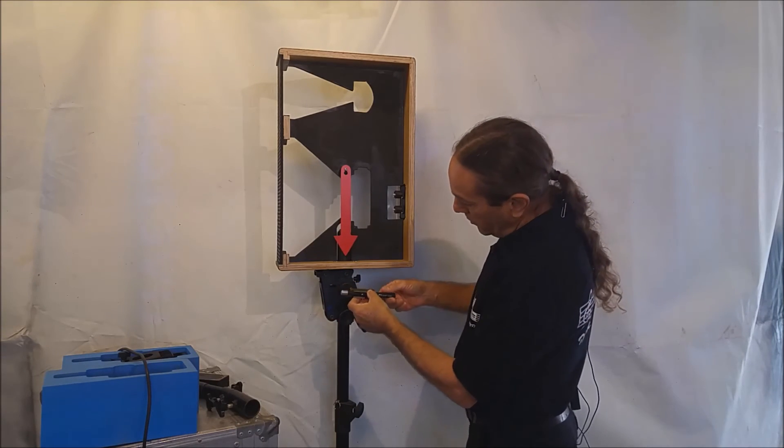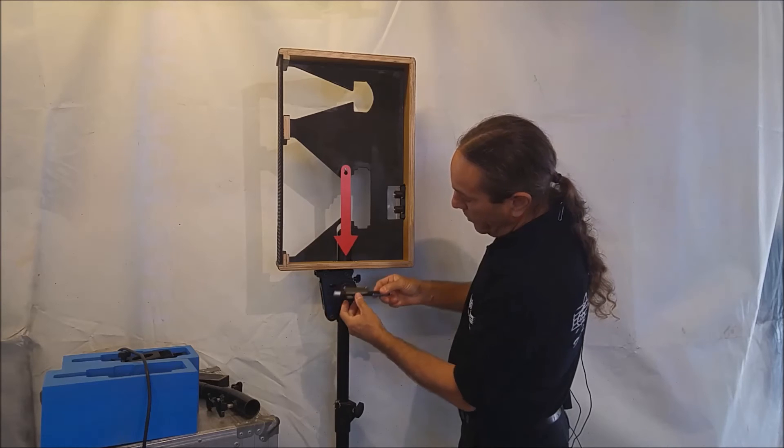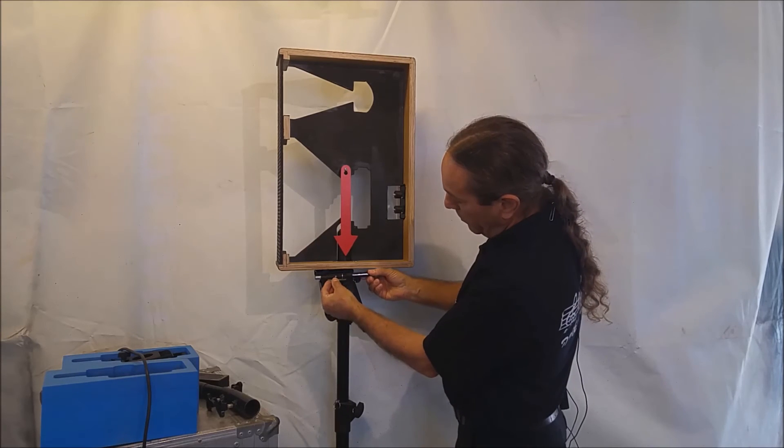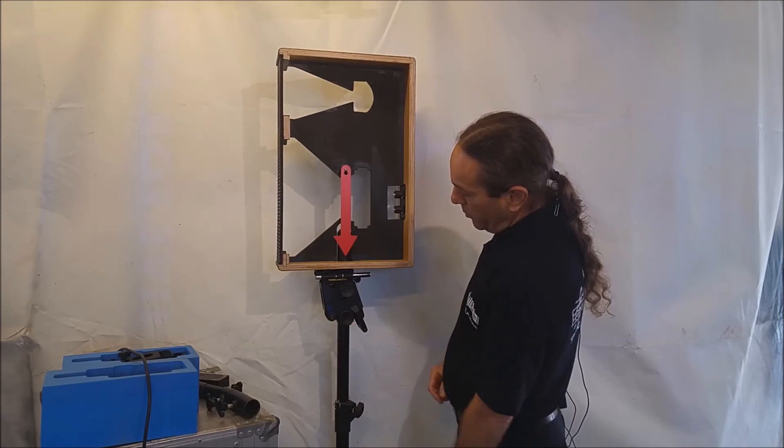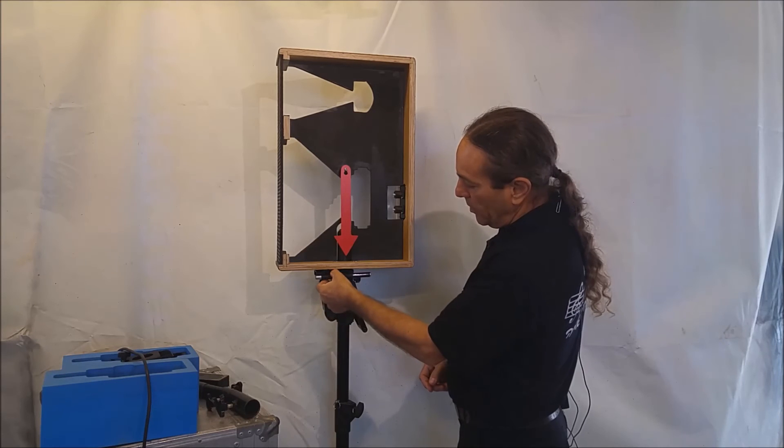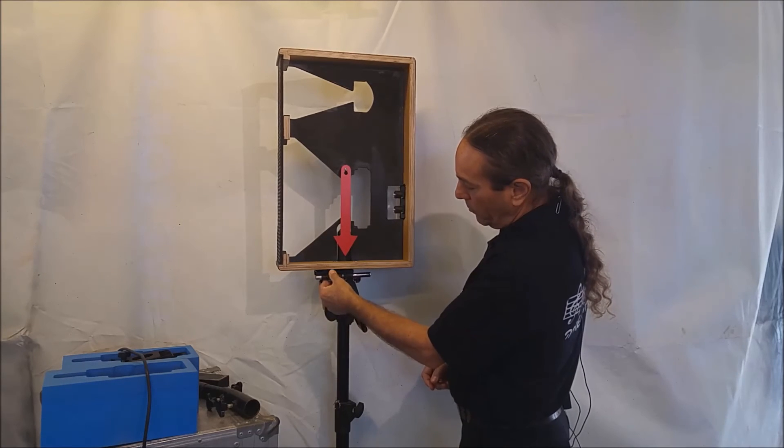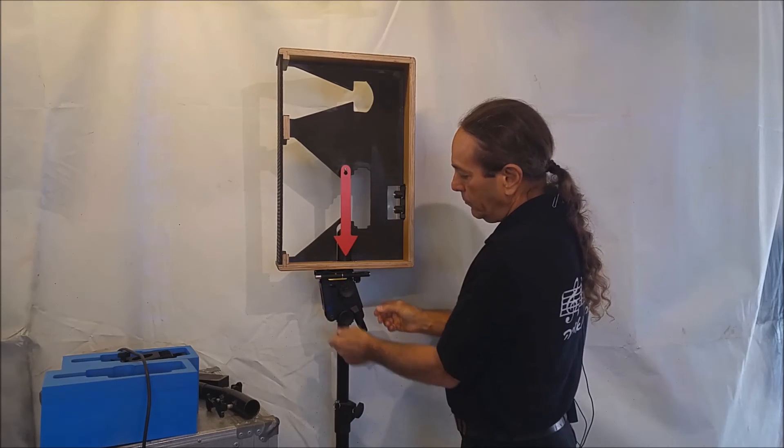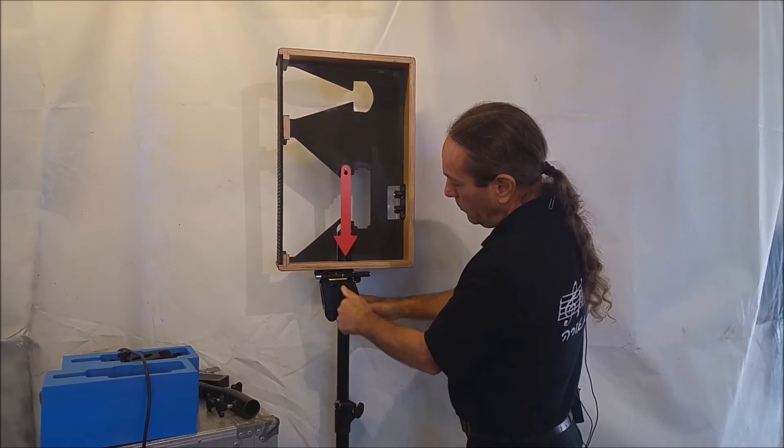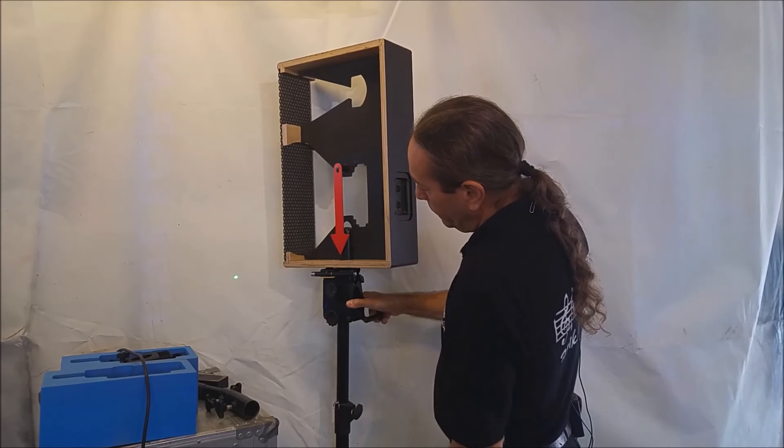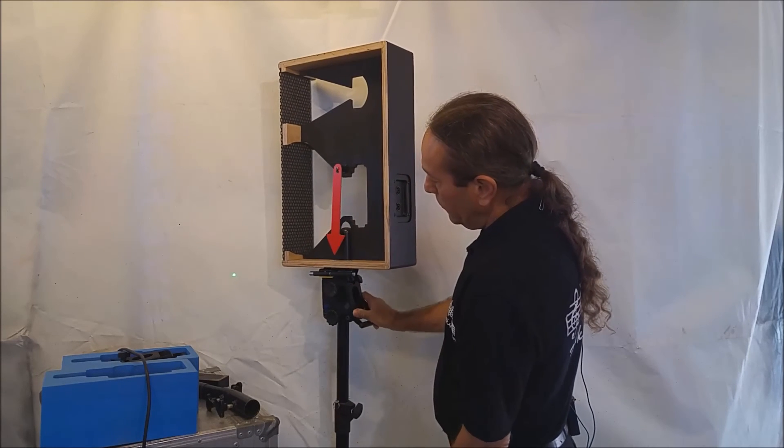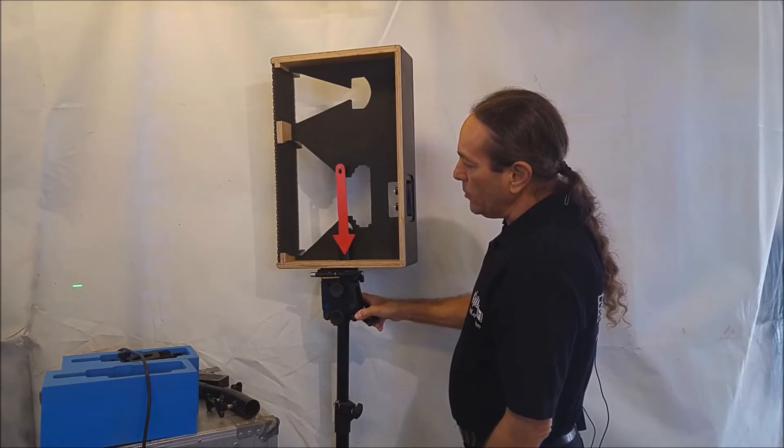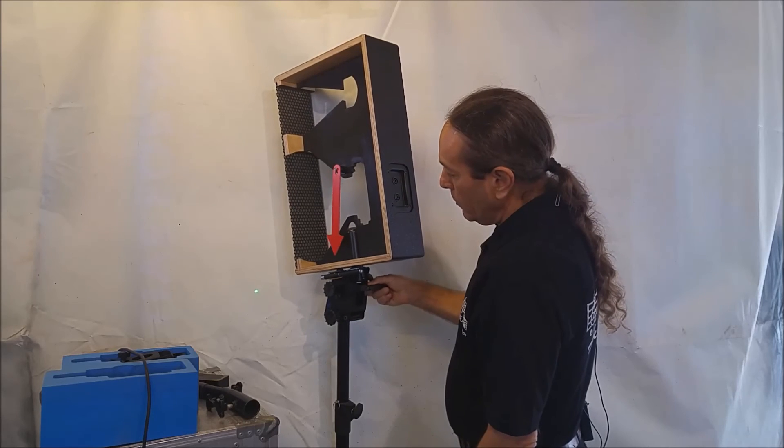The whole thing just mounts on these two bolts here with these two magnets, just like this. Snaps on and off. And then you can operate it like this. And you can see exactly where the loudspeaker is pointing.